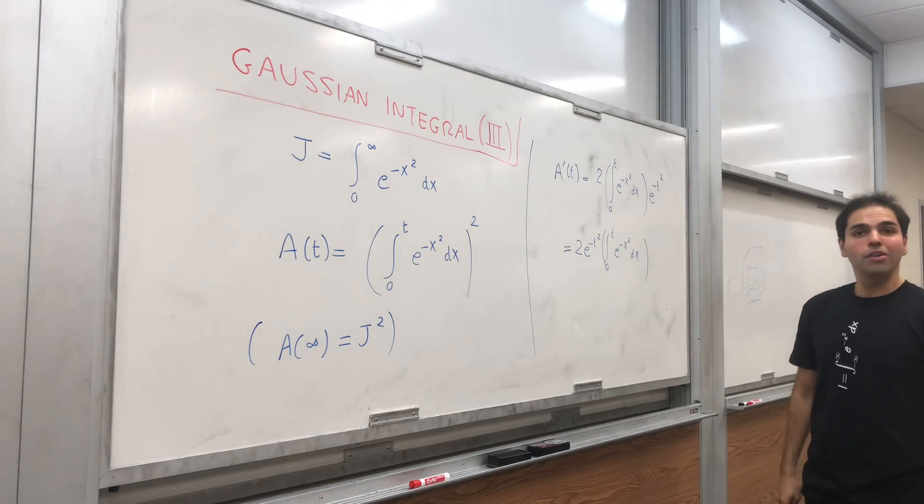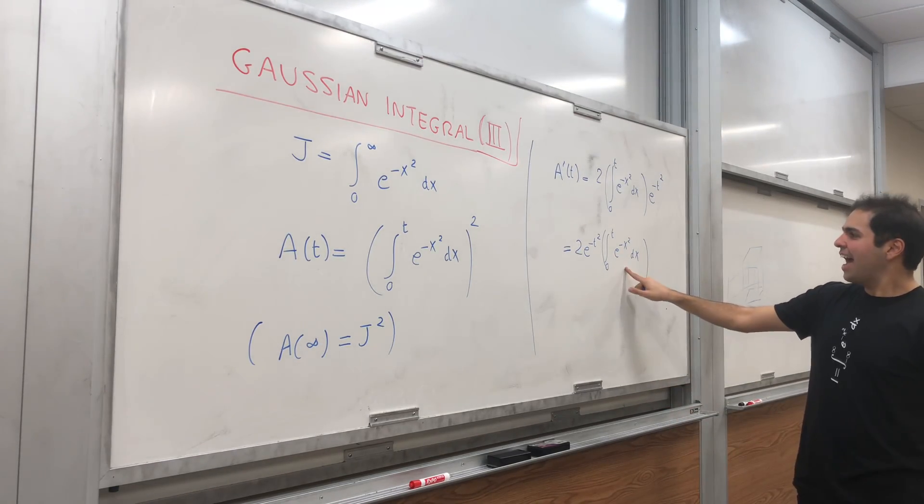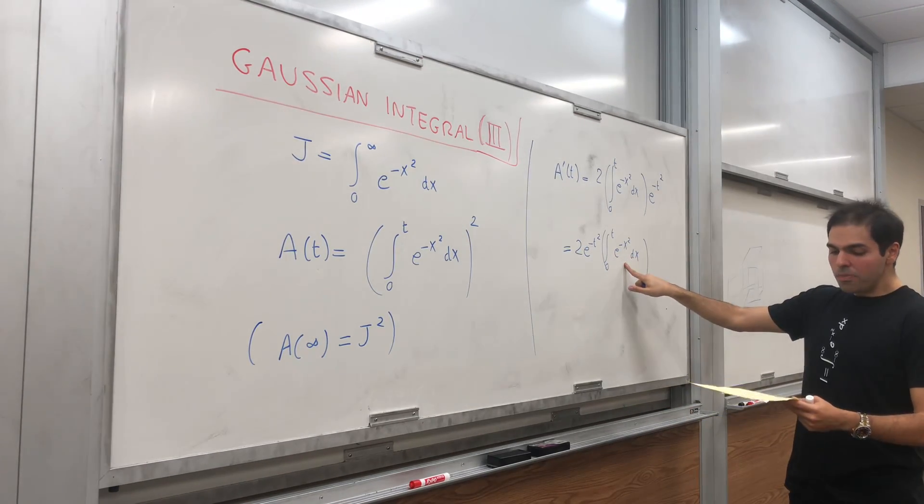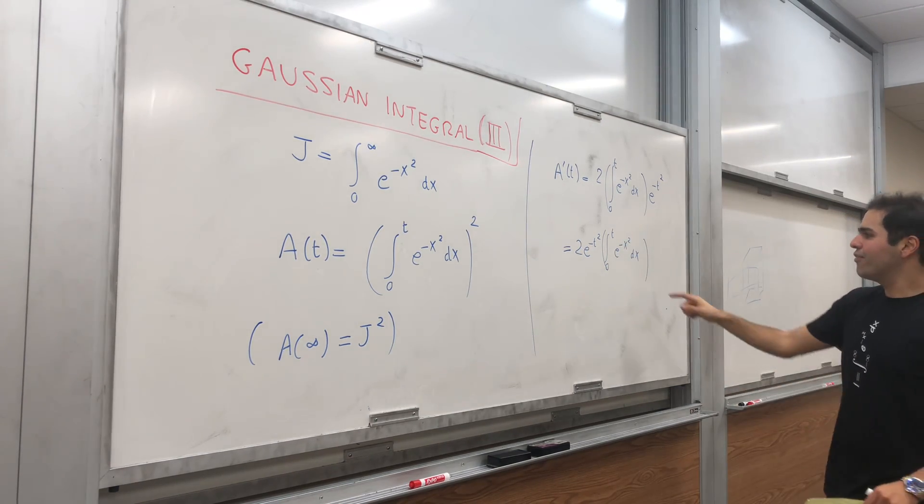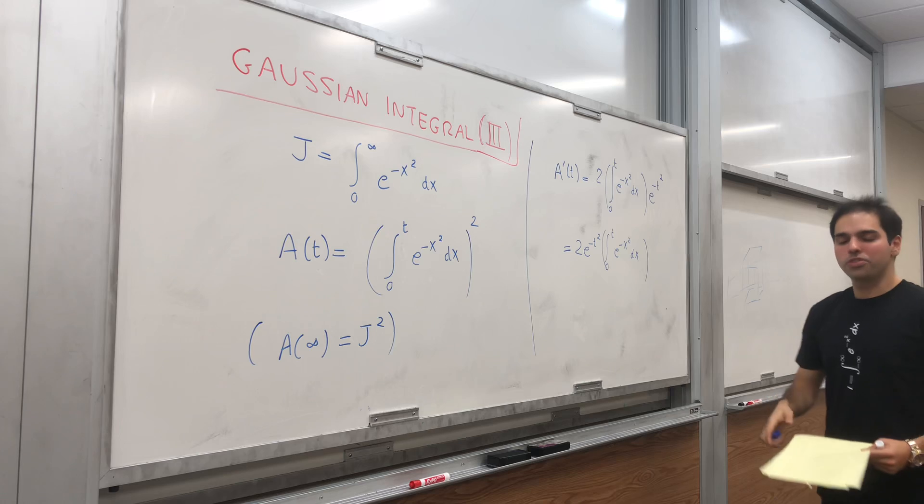So this is equal to that, and so in particular this equals to two e of negative t squared, integral from 0 to t of e of negative x squared dx. This is kind of nice, it involves e of negative t squared, and now what we would like to do, somehow we would like to turn this t into something that does involve t, and for this let's just use a u-substitution.